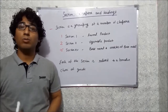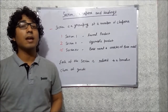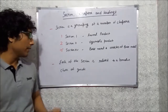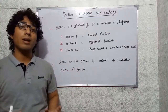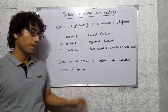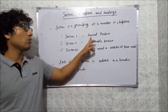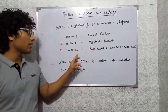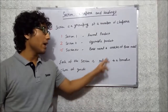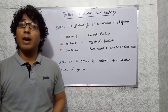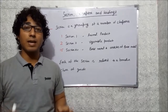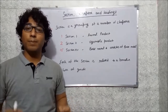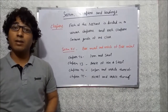The HSN list is divided into sections, chapters, and headings. Sections are the grouping of a number of chapters which codify a particular class of goods, and each section relates to a broader class. For example, section 1 is related to animal products, section 2 to vegetable products, and section 15 to base metals and articles of base metal. Section notes are given at the beginning of each section and govern the entries in that section, and are applicable to all chapters within it.